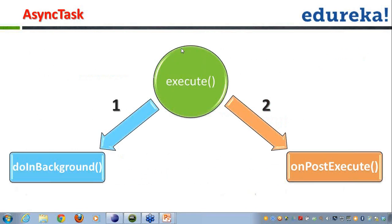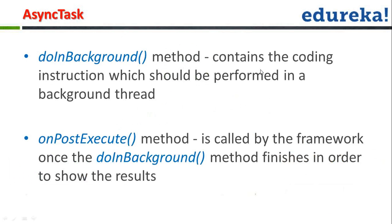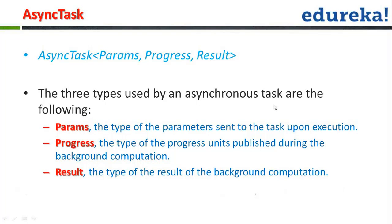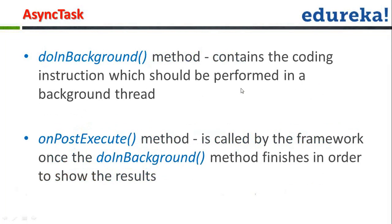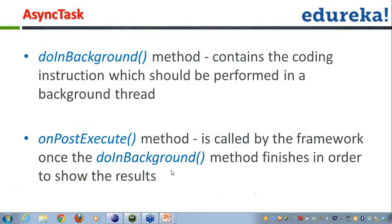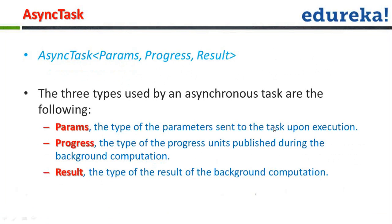Here is an example: when we call execute(), the first method called is doInBackground(), and after that we call onPostExecute(), which tells us the processing is done and we just need to display the output. The doInBackground() method contains the coding instructions to be performed in the background thread, and onPostExecute() is called by the framework once doInBackground() finishes in order to show the results.